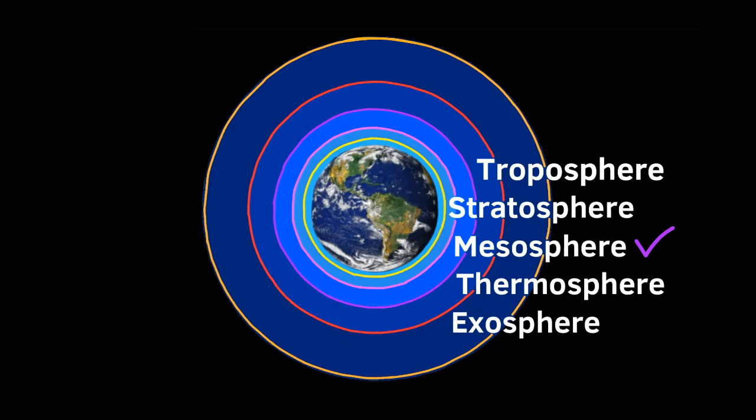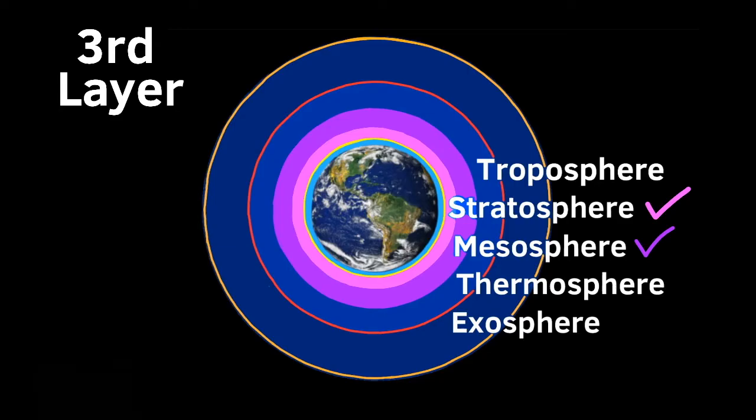The mesosphere is the third layer of Earth's atmosphere, located between the stratosphere and the thermosphere.